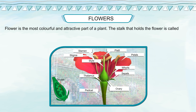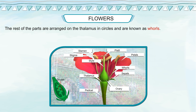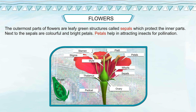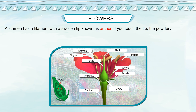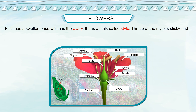Flowers: the flower is the most colorful and attractive part of a plant. The stalk that holds the flower is called the pedicel. The upper swollen part of the pedicel is known as the thalamus. The rest of the parts are arranged on the thalamus in circles and are known as whorls. The outermost parts of flowers are leafy green structures called sepals, which protect the inner parts. Next to the sepals are colorful and bright petals. Petals help in attracting insects for pollination. The inner two whorls are the main reproductive parts: the male part is called the stamen and the female part is called the pistil. A stamen has a filament with a swollen tip known as the anther.